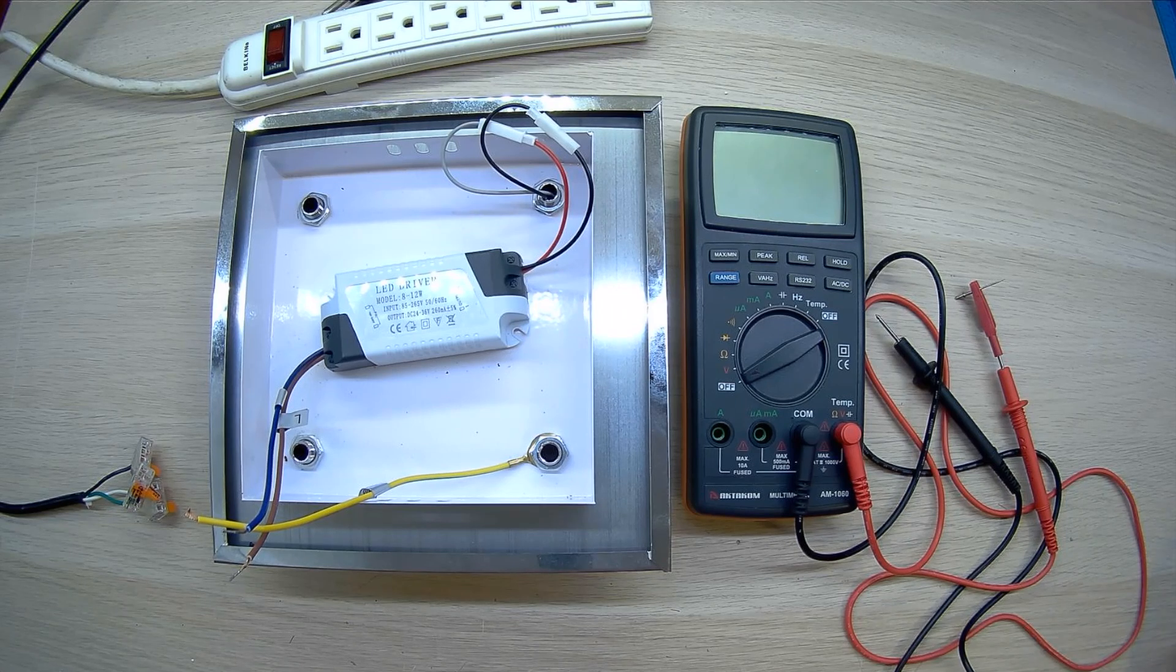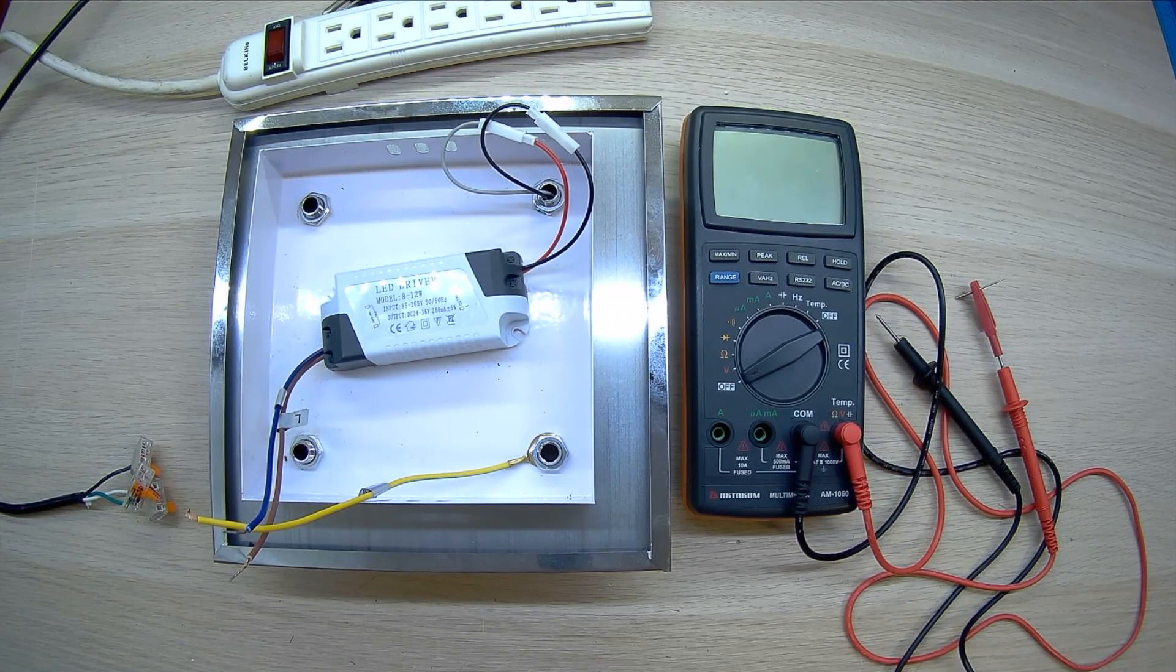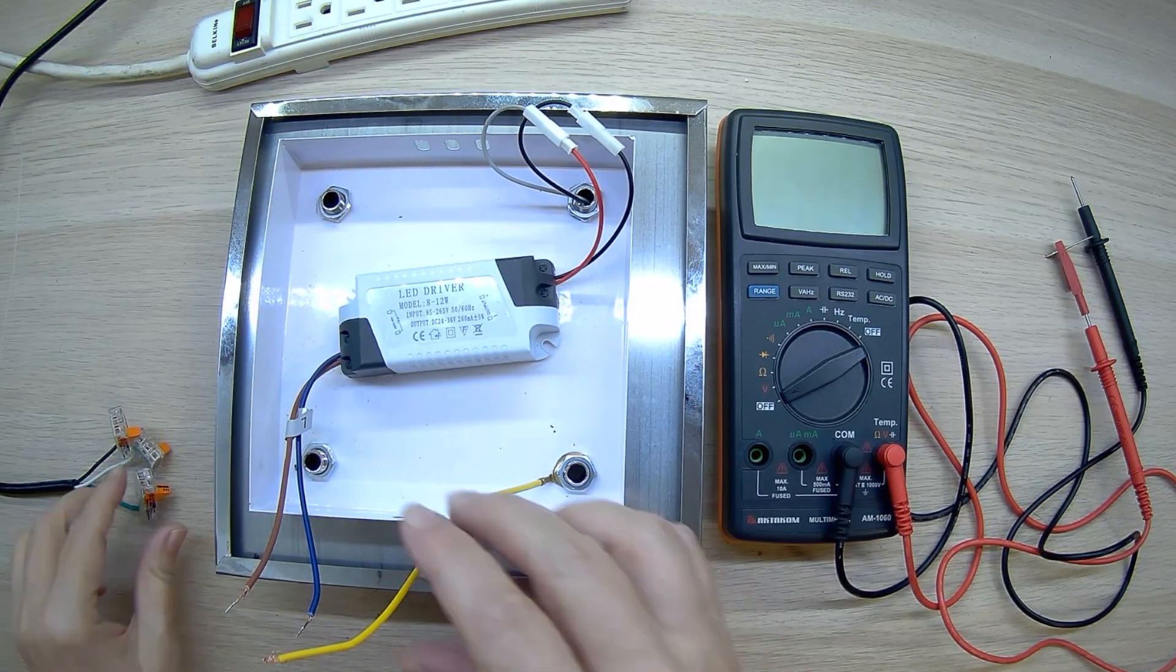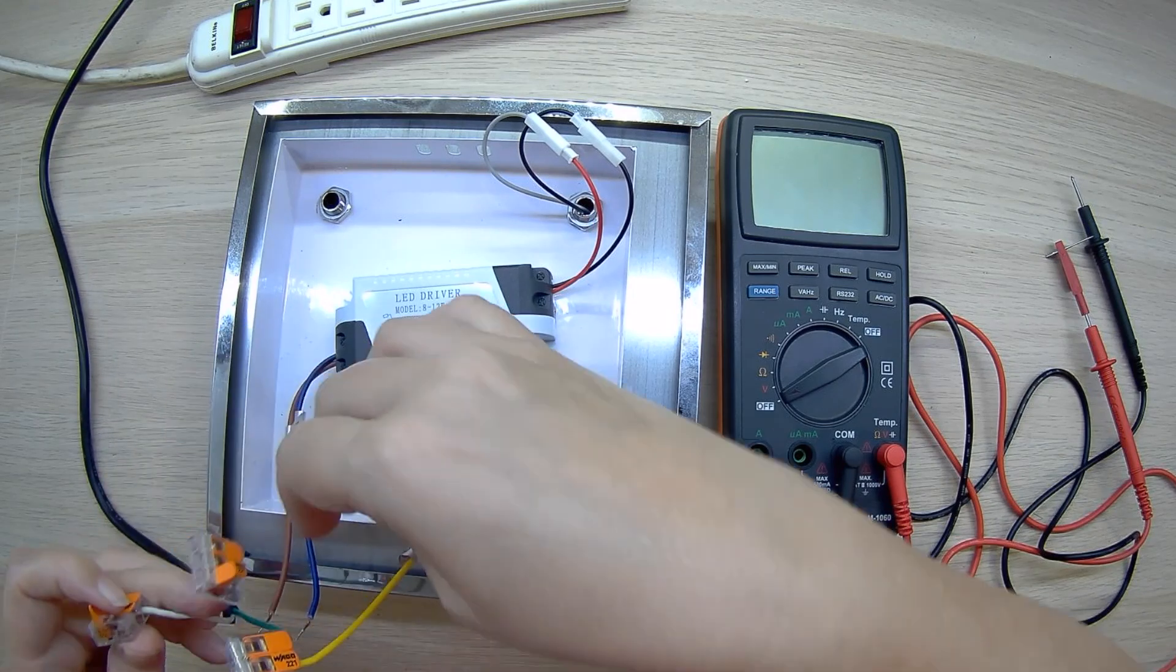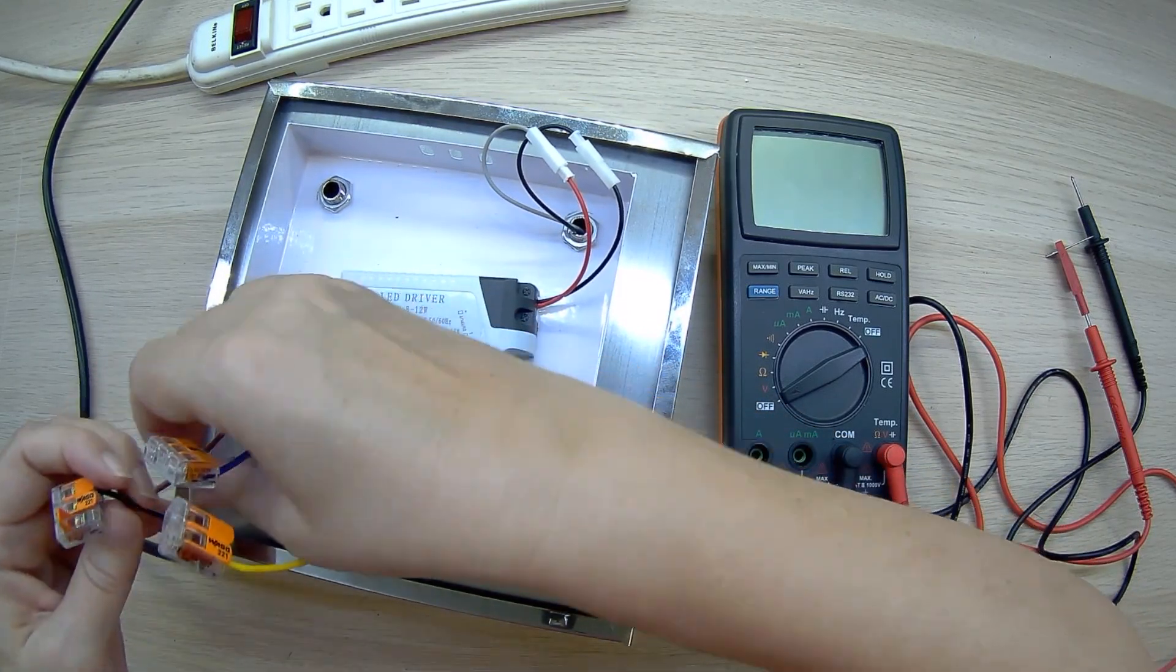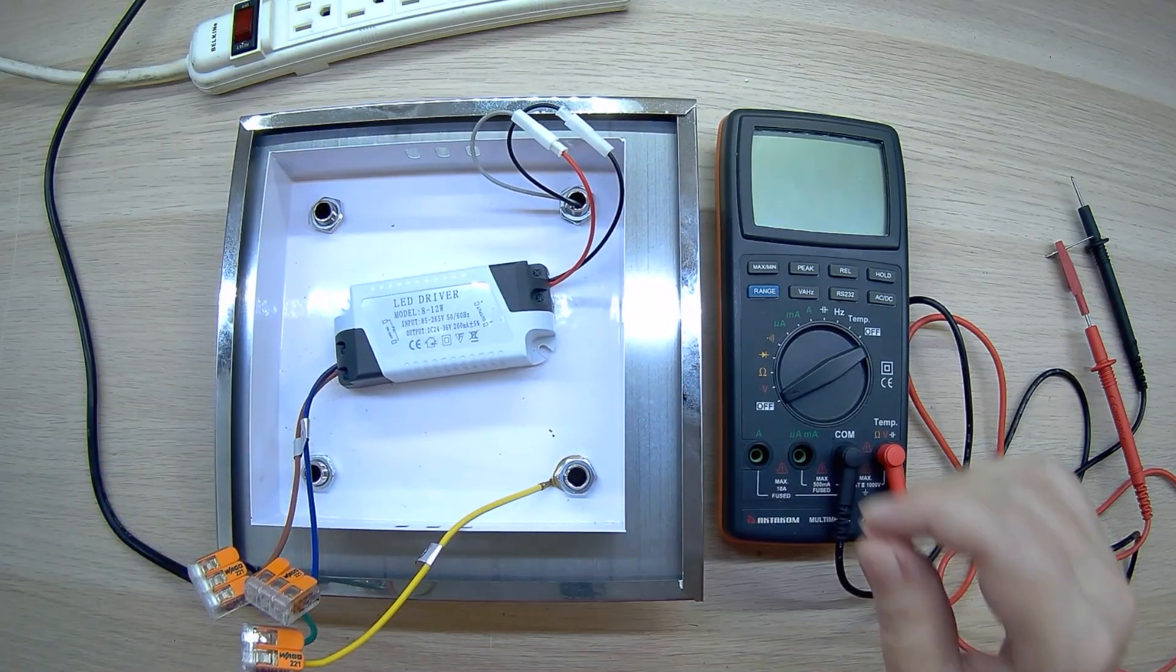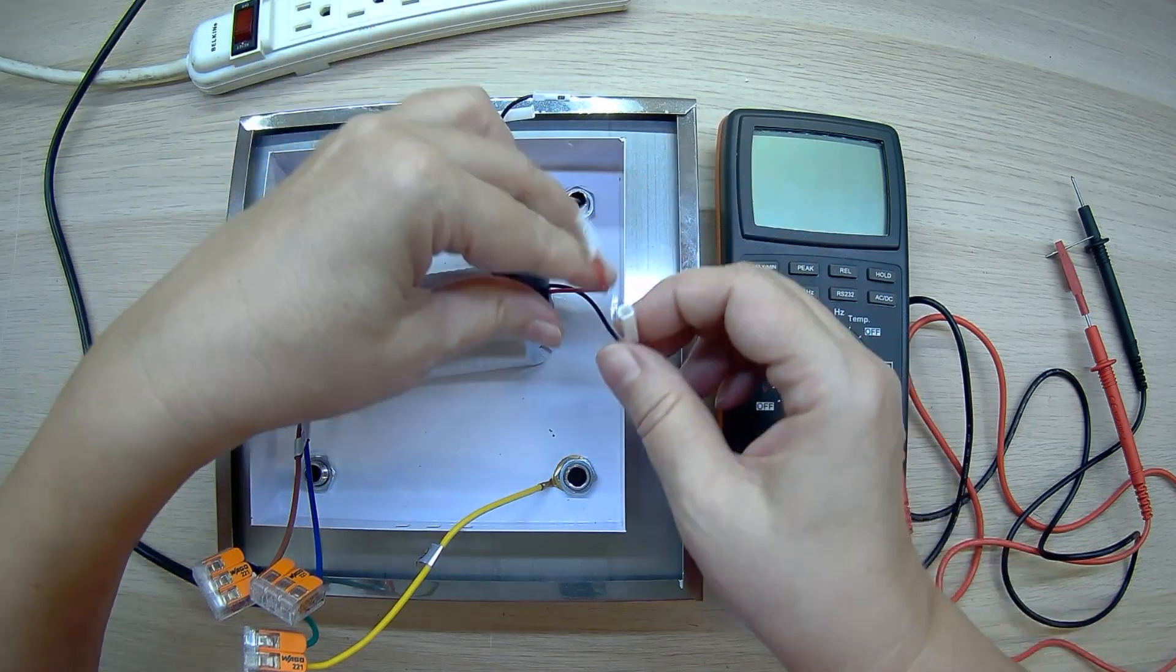The first stage of any repair work is diagnostics, and we need to determine what is faulty: the driver or the strip. We start testing the driver by connecting the mains voltage using safety clips and connecting the mains cable. Turn off the LED strip and connect a multimeter to the driver output.